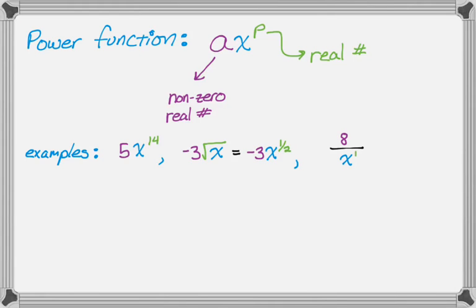And you might see something like 8 over x to the 12th, which is also a power function. To make it look the way we want it to look, we'll bring that up into the numerator as 8x to the negative 12th. So that's generally what power functions look like.